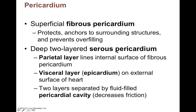For the serous pericardium, there are two major layers: a parietal layer and a visceral layer, just like other serous membranes in the body. The visceral layer is right on the organ itself, and the parietal layer is outside of that — linked up with the fibrous pericardium. The visceral layer is right on the outer surface of the heart and is also called the epicardium. When the heart is beating, the visceral and parietal layers have a nice fluid membrane between the two, so the heart is actually lubricated within this serous membrane.